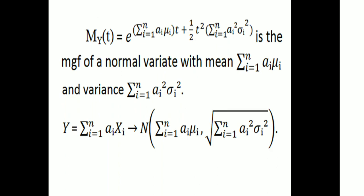Three properties of the additive property of normal distribution have been covered. The first property is for two independent normal variables. The second is the general form for n independent normal variables. The third is the additional property with constants ai.